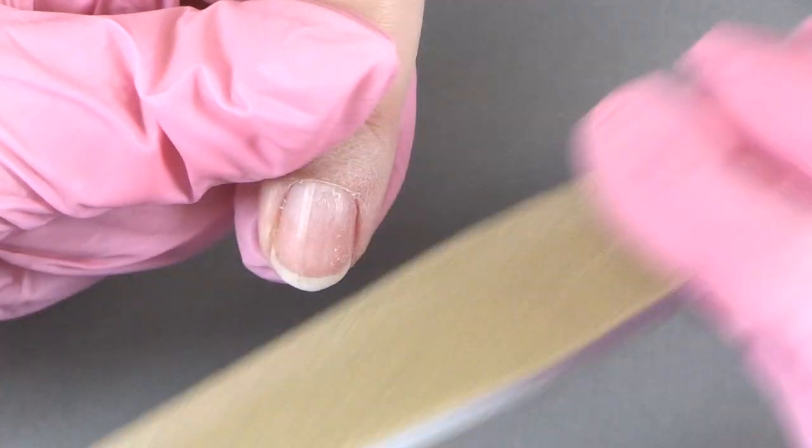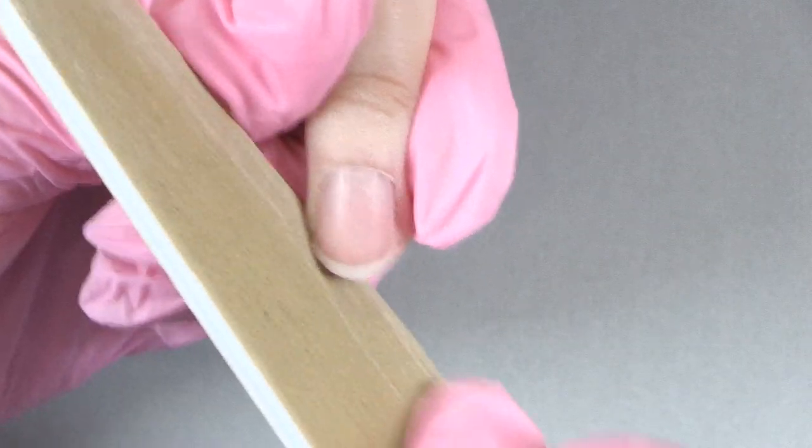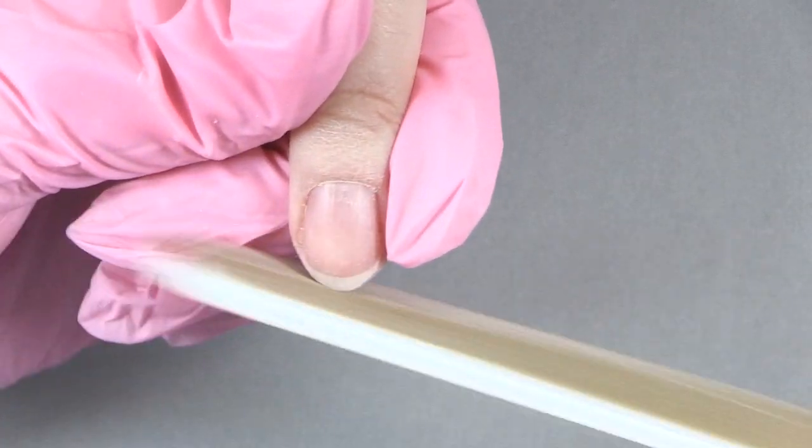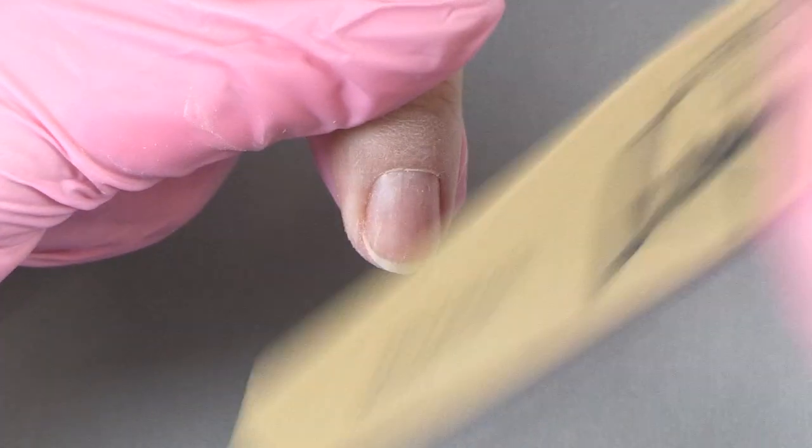Since we're working on a natural nail, we're going to use the 180 side of the file. Going to take your length off and get the shape. And then we're going to lightly, with the 180 grit side of our file, remove the shine off of that natural nail.